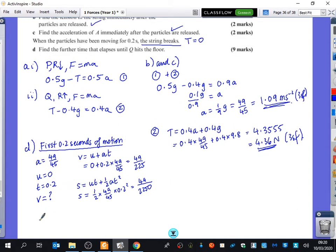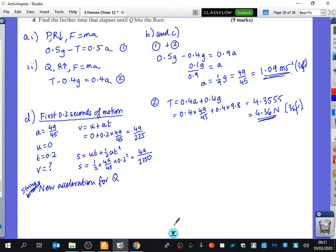So now we're going to have to do, after this first 0.2 seconds of motion, we know that the string breaks, so there will be a new acceleration for particle Q. And the reason that there will be a new acceleration for particle Q is because if we have this thing here, and I just examine what happens, because the string breaks and the tension becomes 0, the equation of motion changes, and you get minus 0.4G equals 0.4A. If you divide both sides by 0.4, you get that the acceleration is minus G, or the acceleration is minus 9.8.